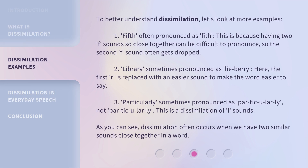To better understand dissimilation, let's look at more examples. One: 'Fifth.' Often pronounced as 'fith.' This is because having two F sounds so close together can be difficult to pronounce, so the second F sound often gets dropped.